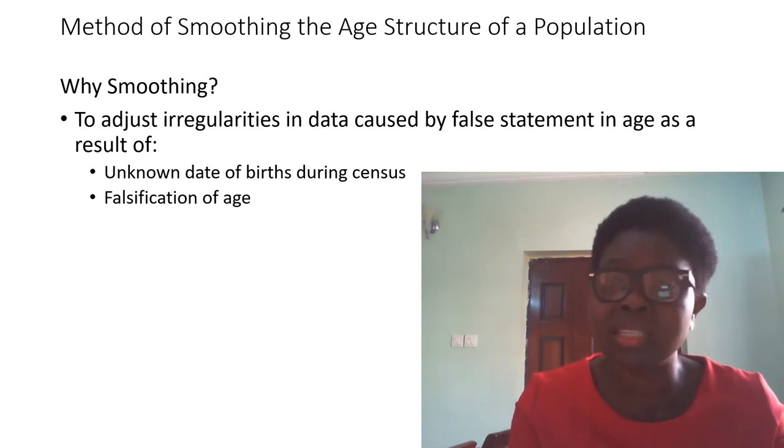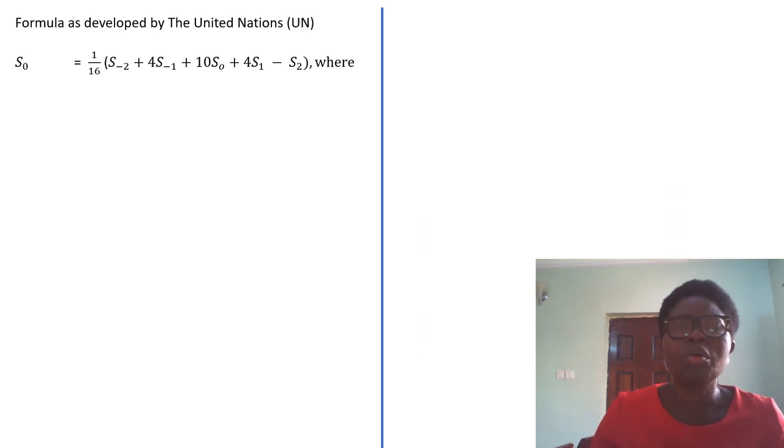So to do this, you have a formula. The formula for working out smoothing the age population is this. You may not need to cram it, just study it and master it. Now what does S₀ represent? That is the number in the age group under consideration.